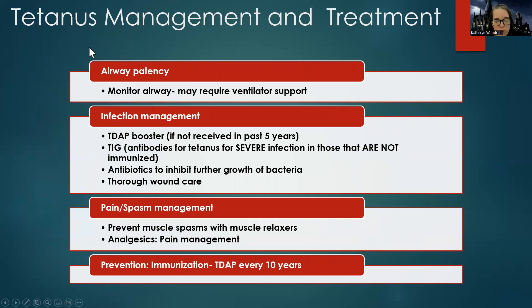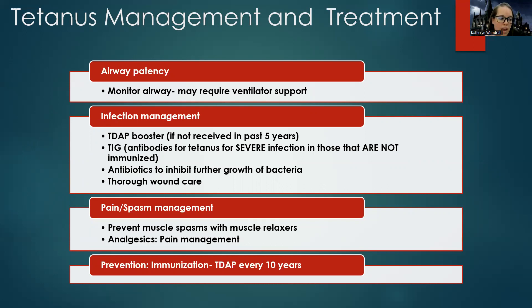So what do we do? First and foremost, we think ABCs — we're going to monitor their airway. The patient may need to be on a ventilator because of that risk for airway closing. We also need to manage the infection — doing thorough wound care and getting ahead of infection is critical. If they have active tetanus, we give antibiotics and look at vaccination status. If they haven't had a booster in the last five years and have a really dirty wound, we usually give them a booster.